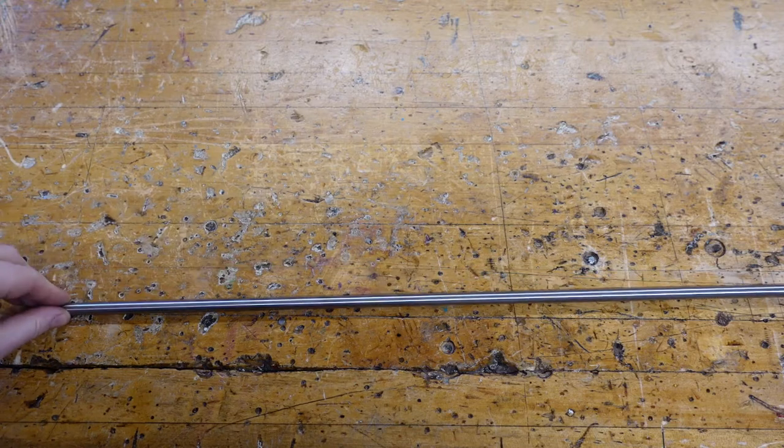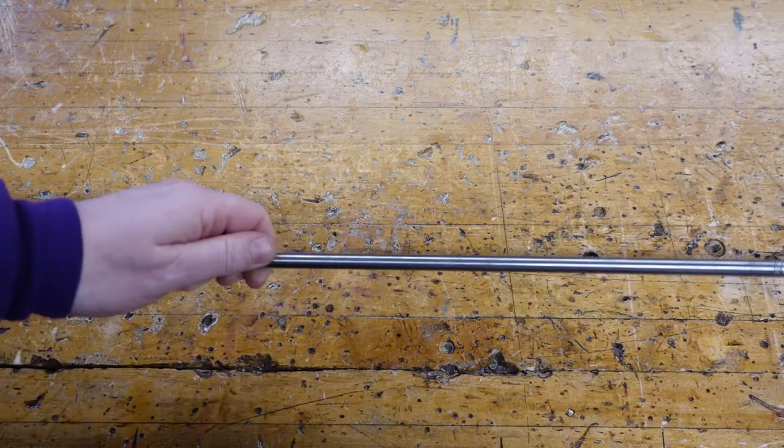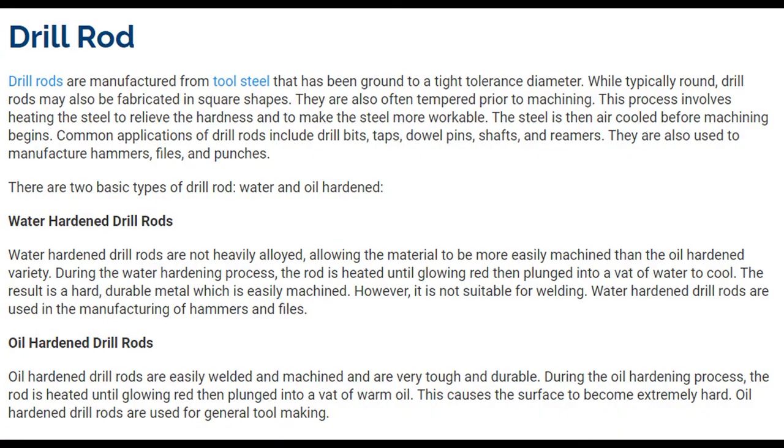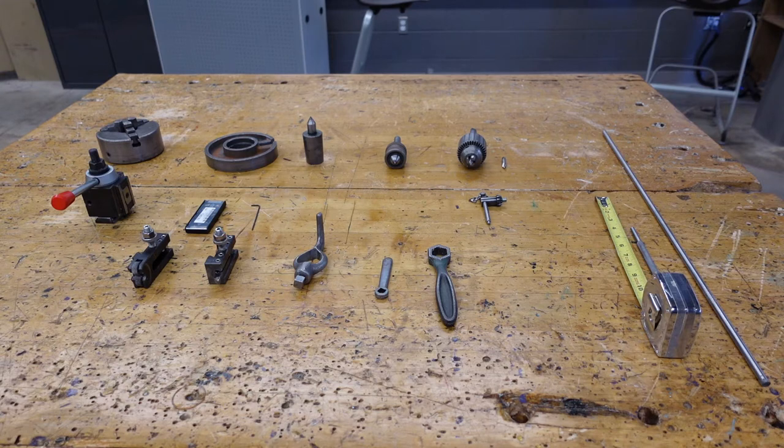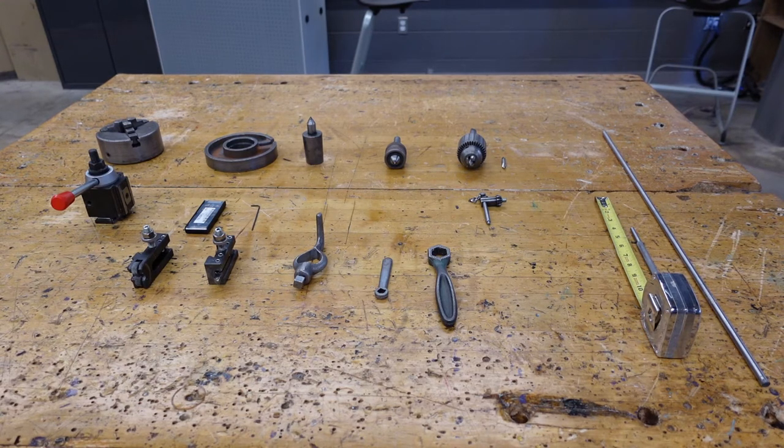Let's start by talking about what kind of metal we're going to be using: drill rod. It is a pretty awesome material. It is soft to start machining but then can be hardened so we can use it as a tool. There are two types of hardening processes, water and oil. We're going to be using oil in our shop.